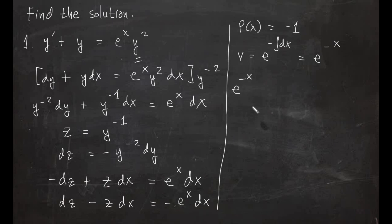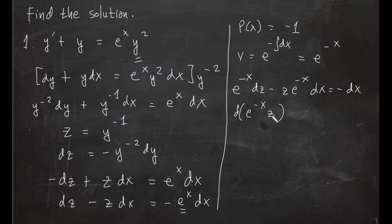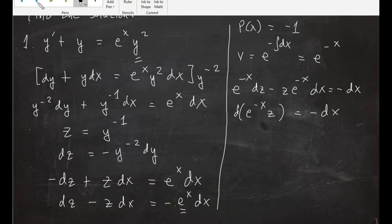Multiplying through by e raised to negative x, we verify that the left side of the equation is simply the differential of e raised to negative x times z — by the product rule: e raised to negative x dz plus z times e raised to negative x times negative dx.